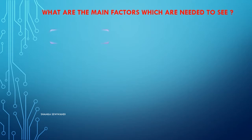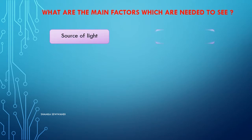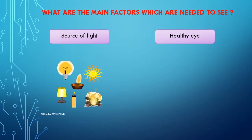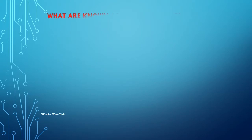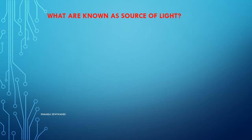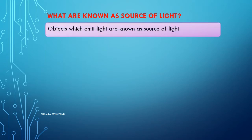The first main factor is sources of light. Objects which emit light are known as sources of light.